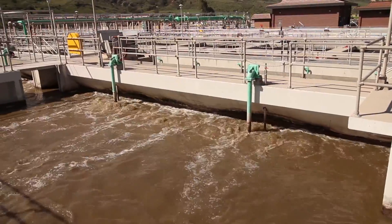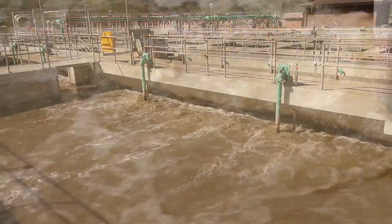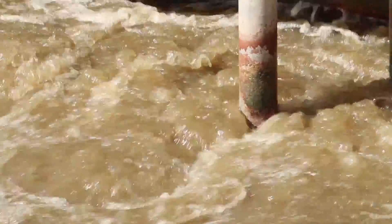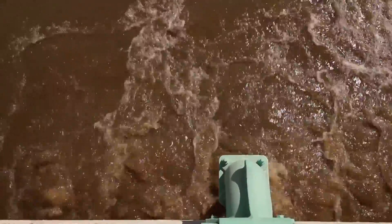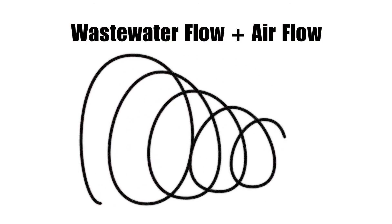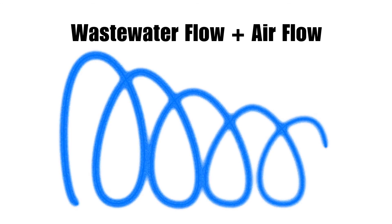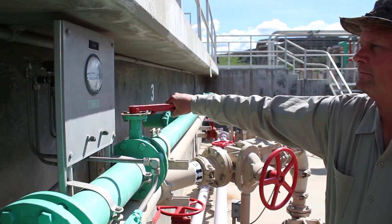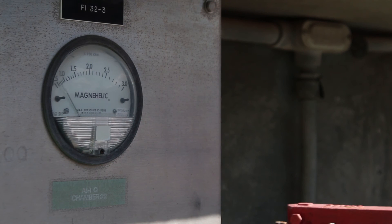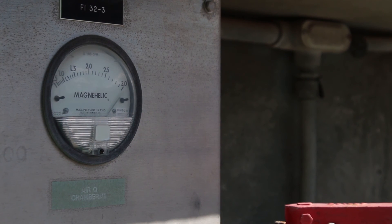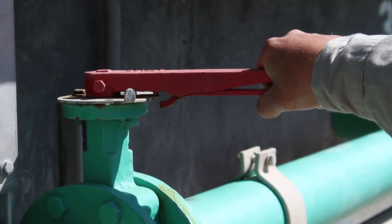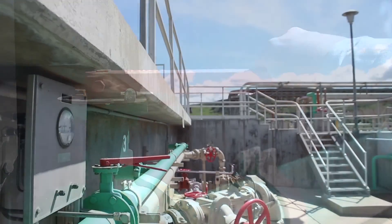These aerated grit chambers are divided into two segments. Each segment is equipped with a diffuser for injecting air and a hopper for collecting the grit. As the wastewater flows longitudinally through the grit chamber, air is injected so that it produces a rolling action across the width of the chamber. The combined effect of the wastewater flow and the airflow creates a spiral flow pattern, causing the grit to settle out and accumulate in the hoppers. The amount of air sent to the grit chambers is critical — not enough air will allow organic material to settle out and too much air will keep the grit in suspension. A butterfly valve is used to throttle airflow to obtain the optimum airflow.